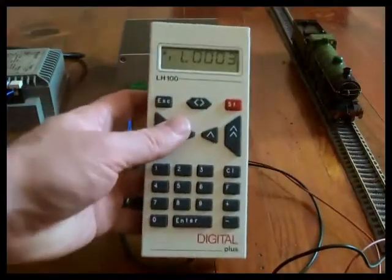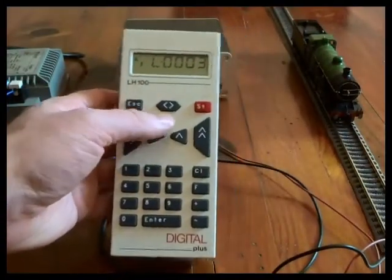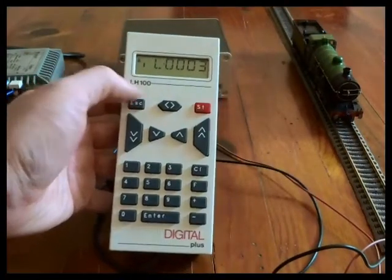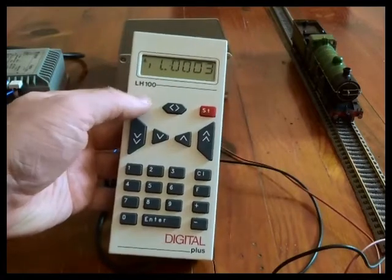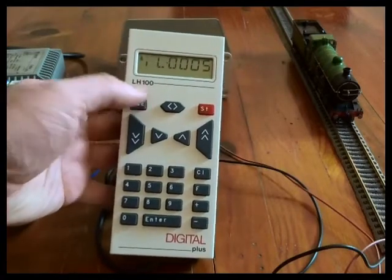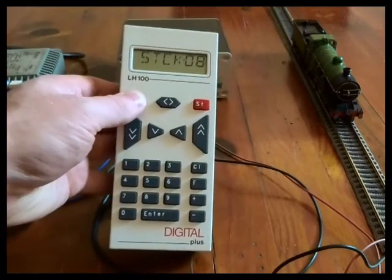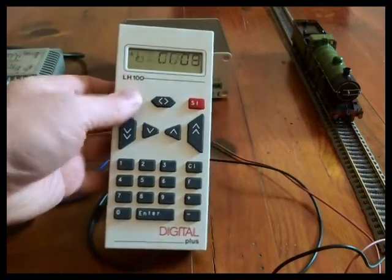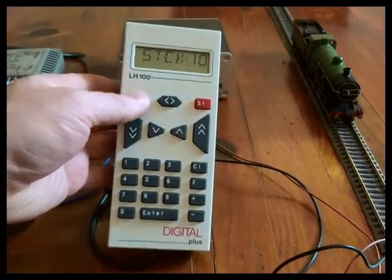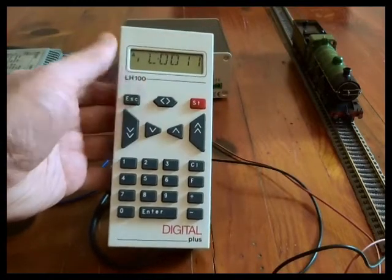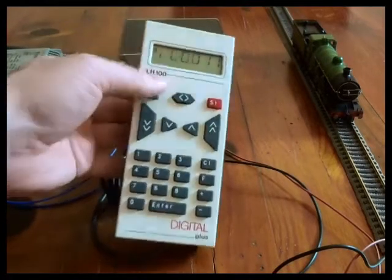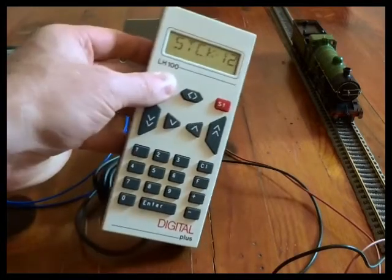The LH100 has a handset stack of 12 locomotives. By pressing the escape key here, you can go through all the storage slots. If you hold it, it will tell you which slot you're in, and when you release it, it will show the loco address that's in that slot.